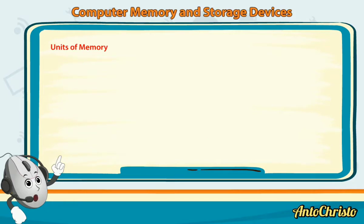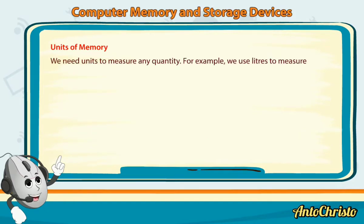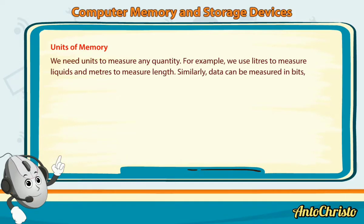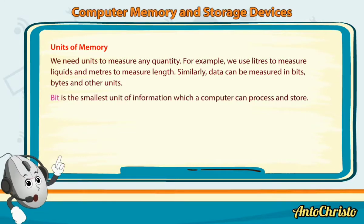Units of Memory: We need units to measure any quantity. For example, we use liters to measure liquids and meters to measure length. Similarly, data can be measured in bits, bytes and other units. A bit is the smallest unit of information which a computer can process and store.